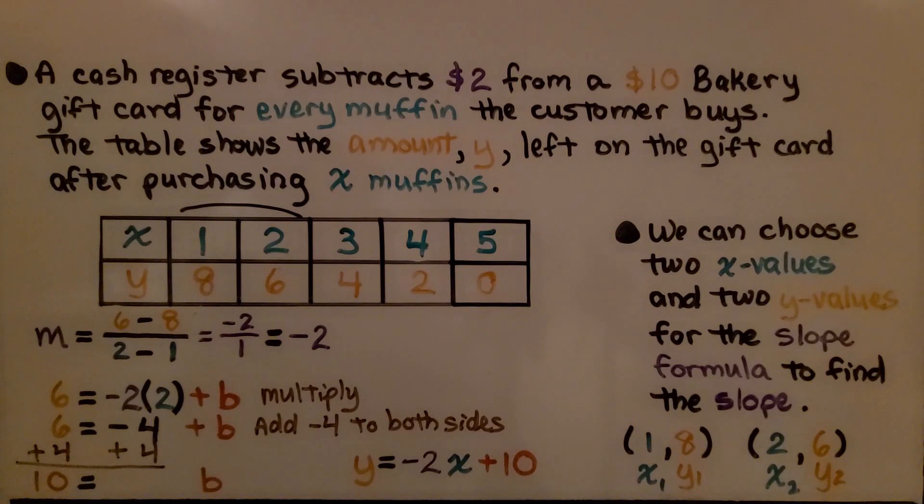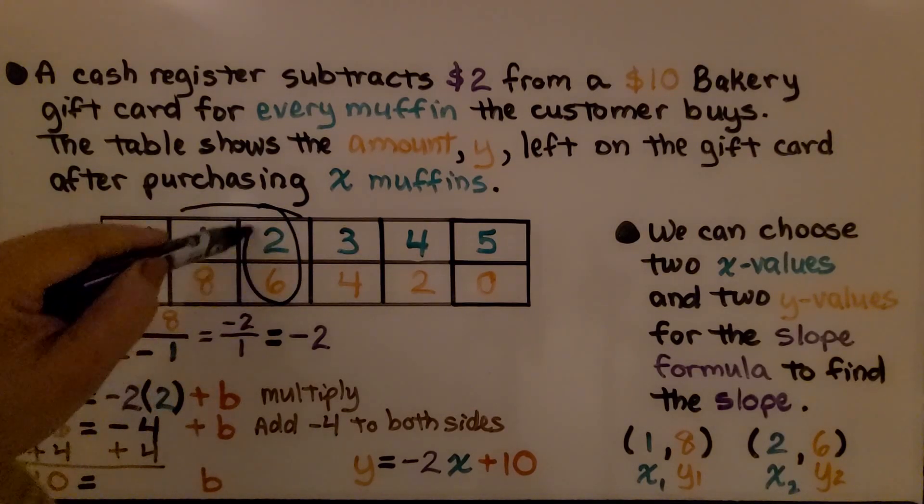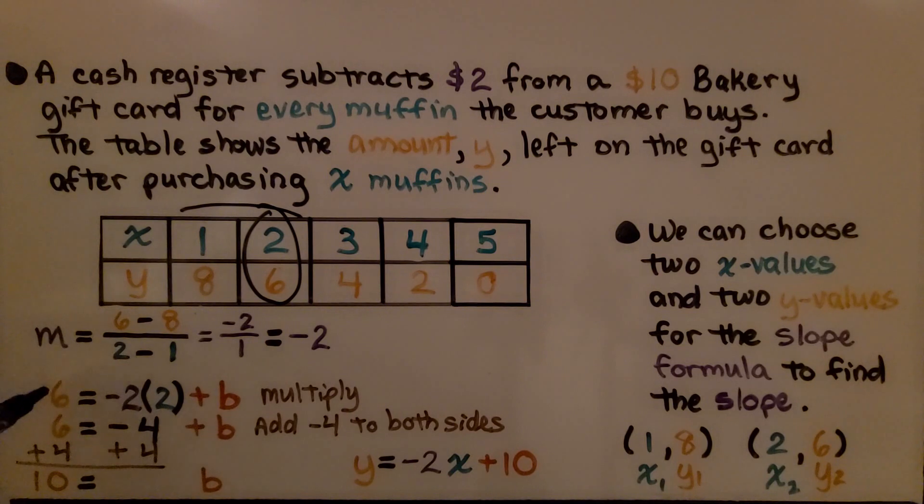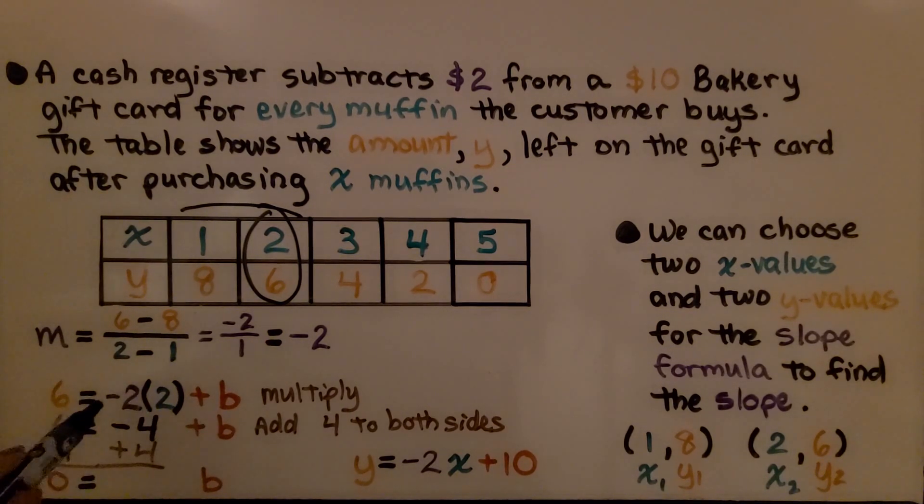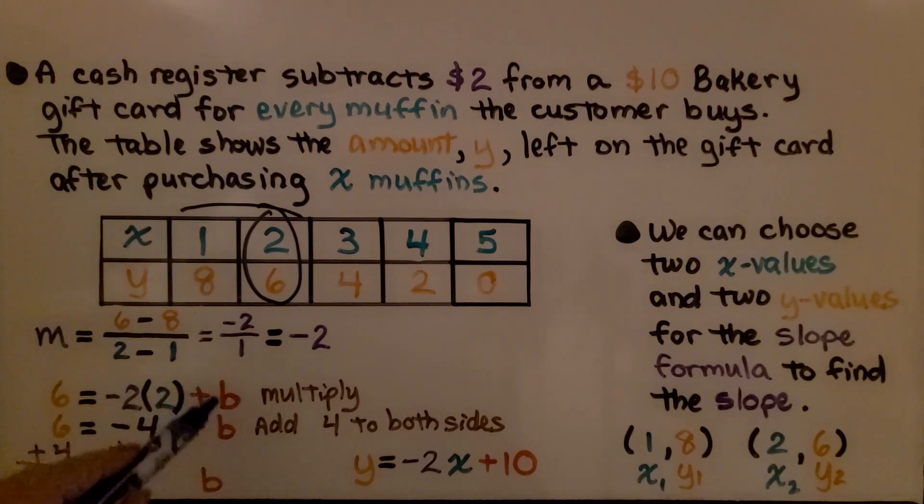Now we need to find the y-intercept. We can use the slope and any point. We have a slope of negative 2. Let's use this point right here. We're going to use 2 for x and 6 for y. We just put it into the equation. We multiply negative 2 times 2 and get negative 4. Now we have 6 equals negative 4 plus b. This b is the y-intercept we're trying to find. We add 4 to both sides of the equation.